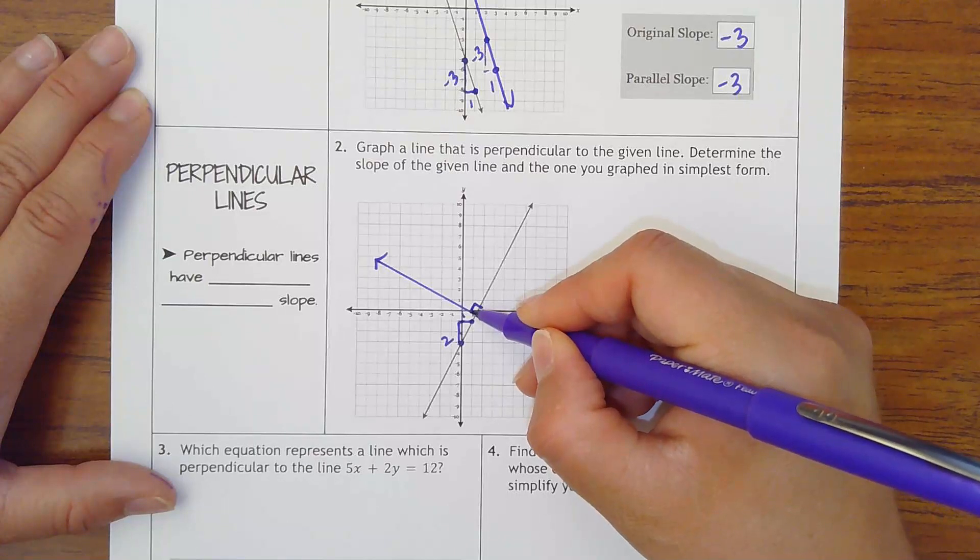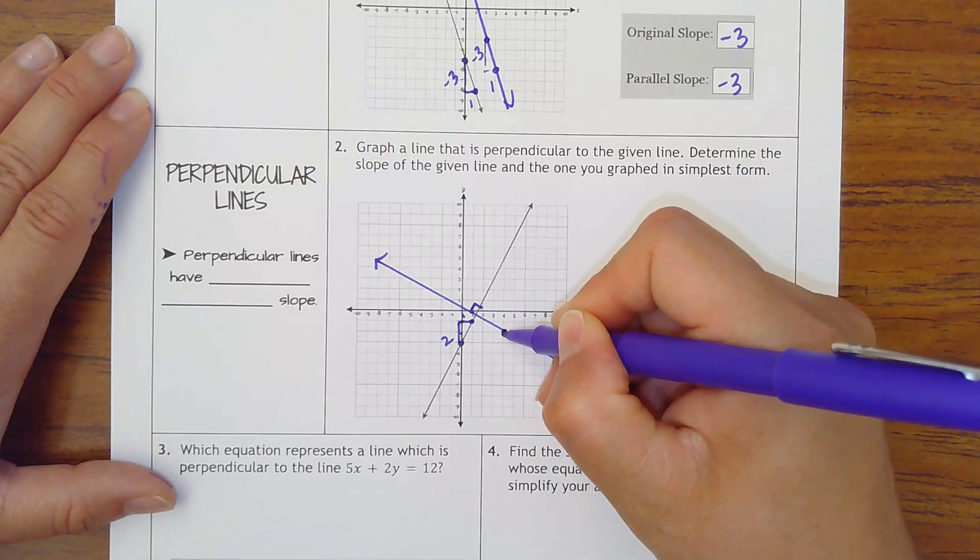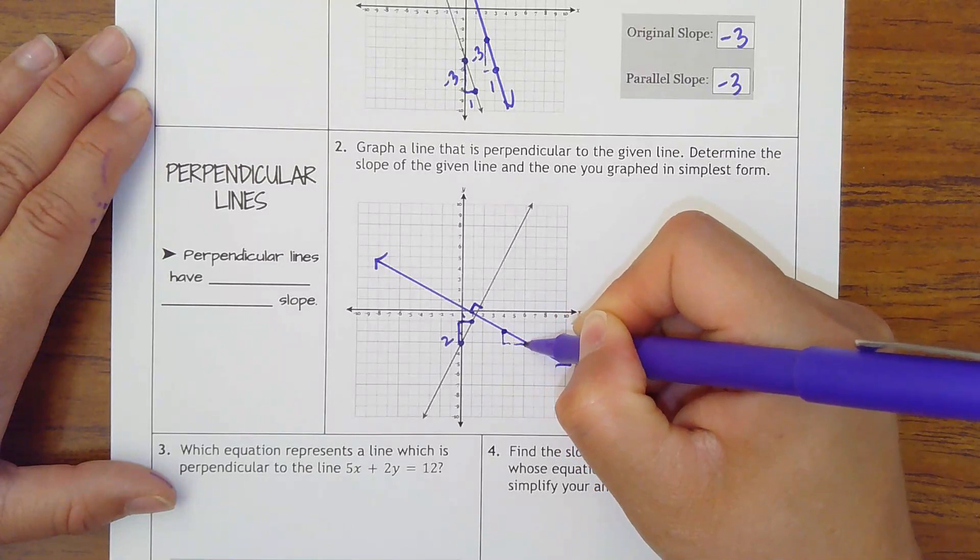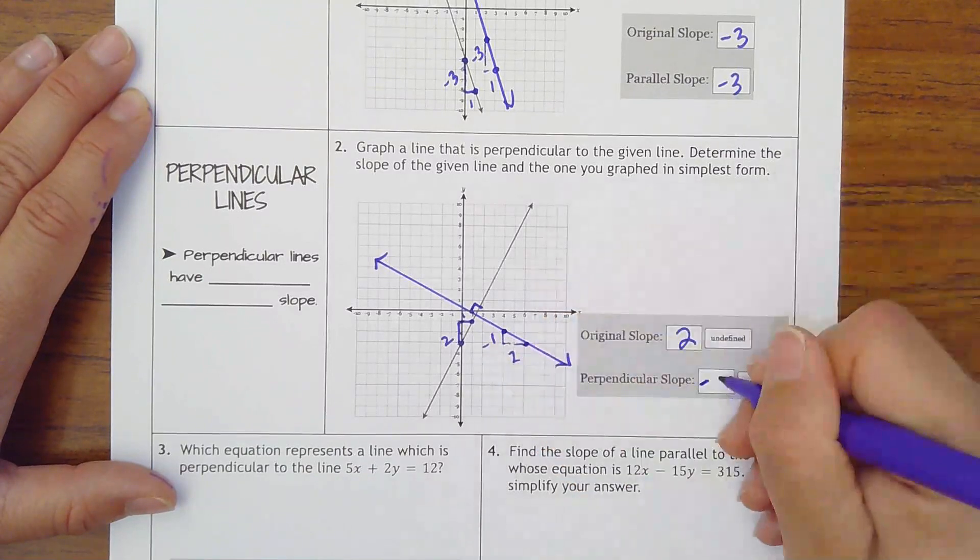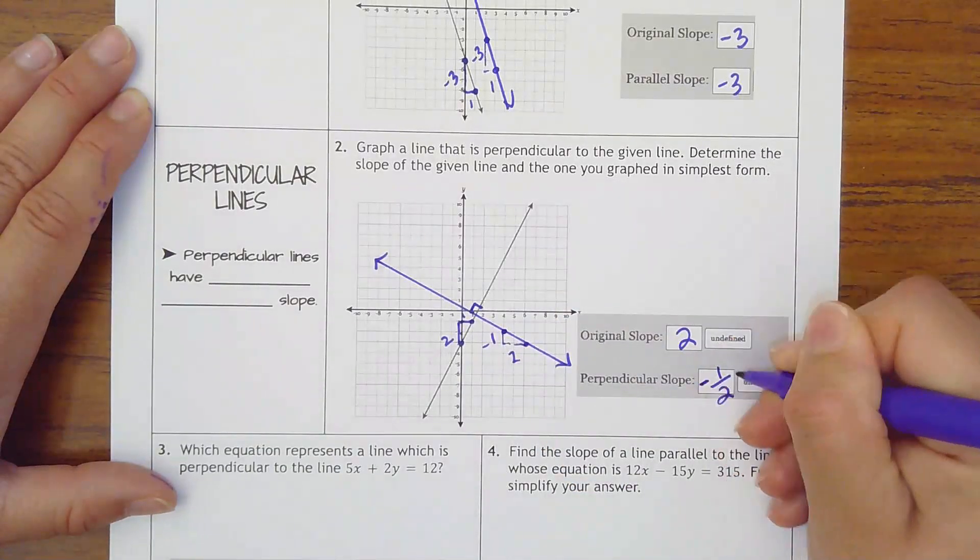So really it should be like a, let's pick this point, down 1, right 2. Or negative 1 half, which is the reciprocal of 2.